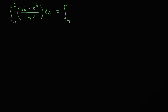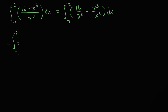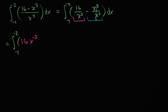This is the same thing as the definite integral from negative one to negative two of 16 over x to the third minus x to the third over x to the third dx. We can write the first term as 16x to the negative three. And x to the third over x to the third is just going to equal one, so this becomes minus one dx.